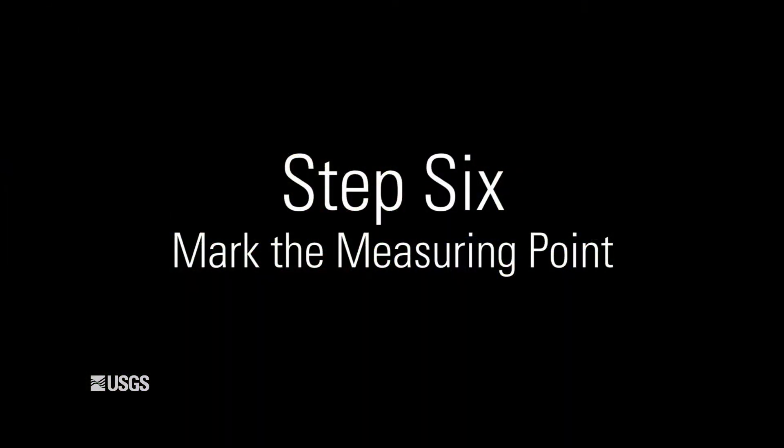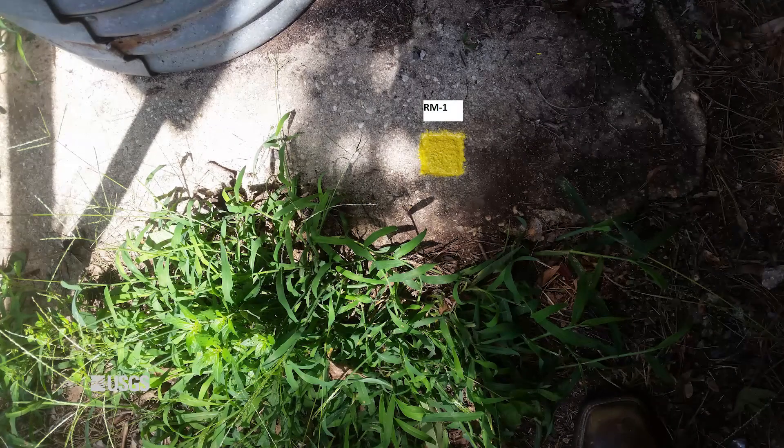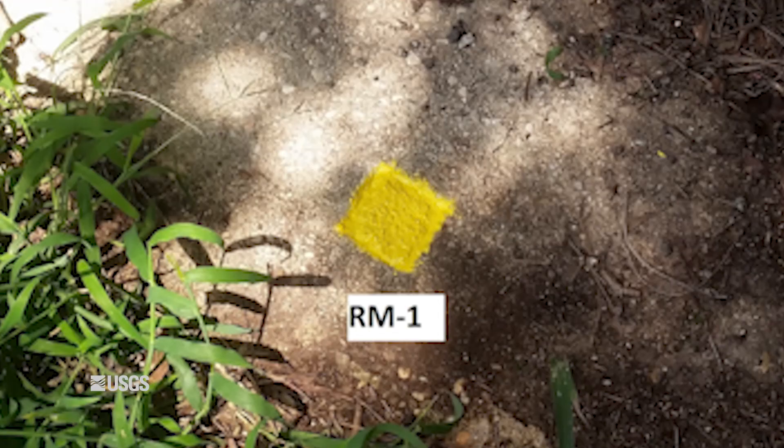Step 6: Using a file, lightly mark the measuring point on the well casing. Optionally, mark the measuring point with a permanent marker or spray paint.